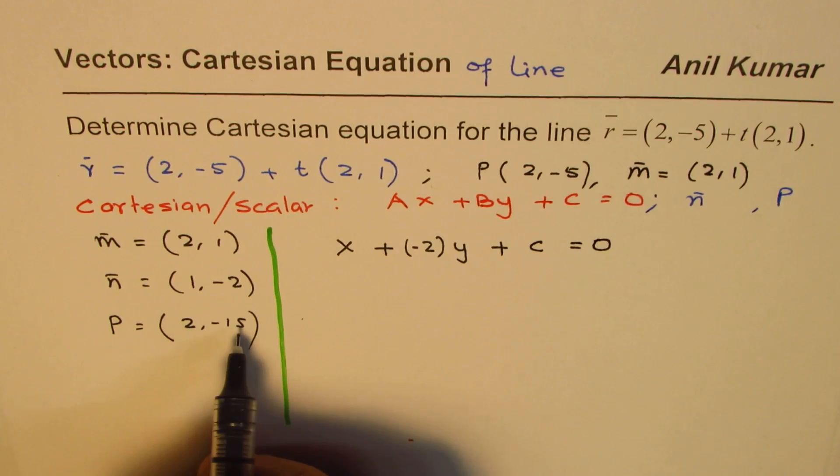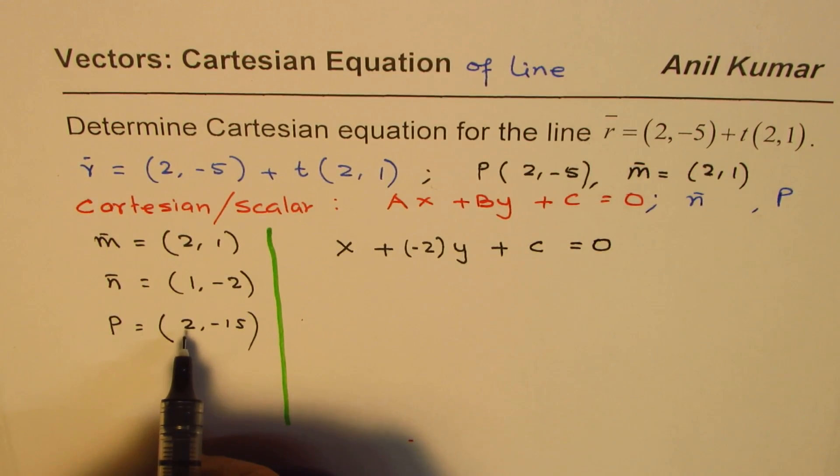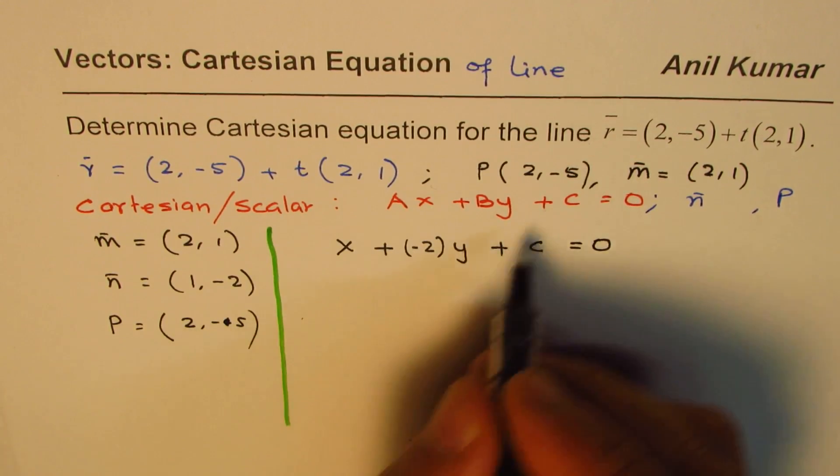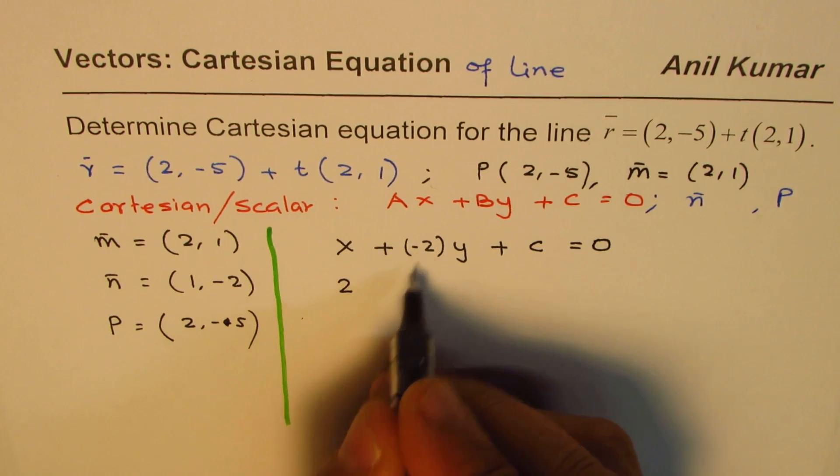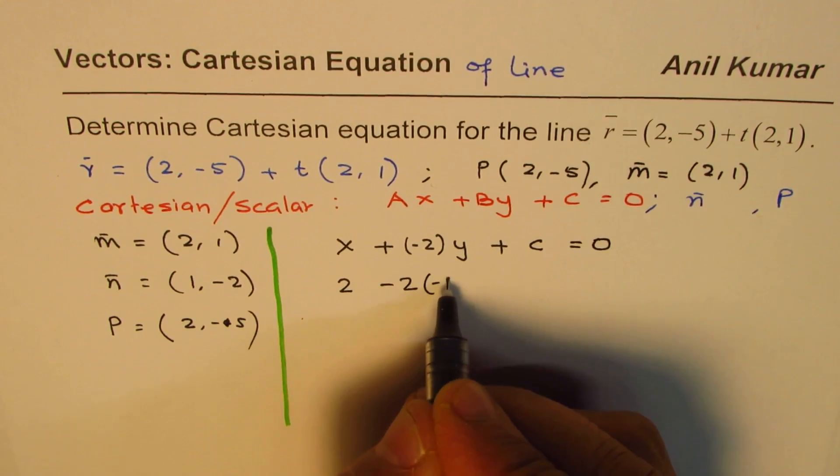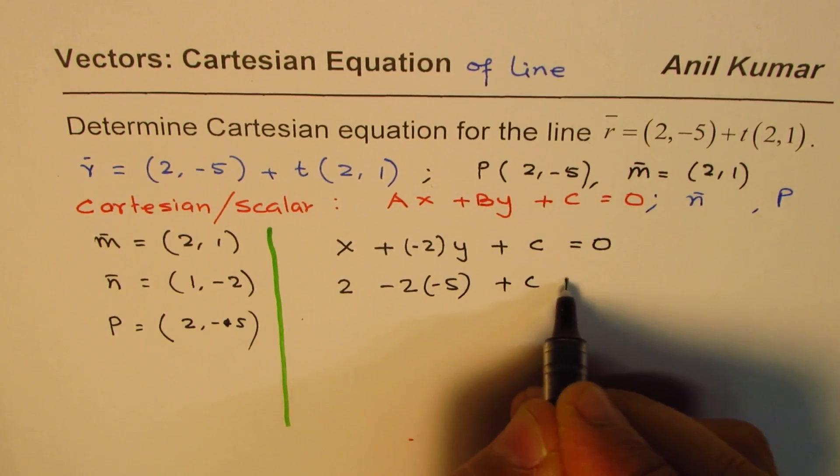x and y we can use from this point, which is 2 and -5. So 2 and -5. So if I write x as 2, I get 2, this is -2, y is -5, plus C equals 0.